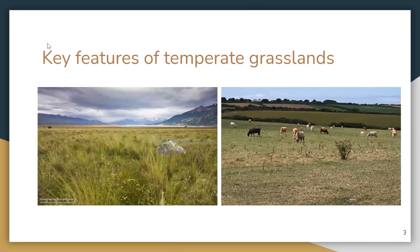So first let's familiarize ourselves with the kind of environment we're dealing with by looking at the key environmental features of a temperate grassland. Temperate grasslands are characterized as having grasses as the main dominant vegetation. Trees and large shrubs are absent. Temperatures vary more from summer to winter, meaning they have hot summers and cold winters. Summer temperatures can be well over 38 degrees Celsius, while winter temperatures can be as low as negative 40 degrees.